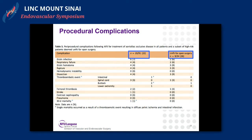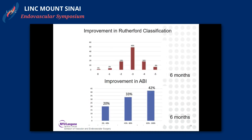We did have one death — one 30-day mortality from a thromboembolic event in a patient who had significant thrombus in the aorta and embolized to the intestine and buttock. Rutherford classification improvement at six months was significant at 73%, and likewise there was improvement in ABI shown in the bottom panels.